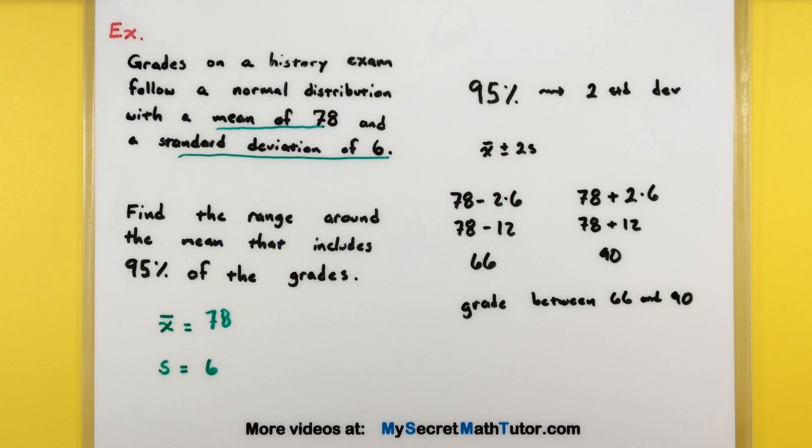Now this is just an approximate value. If you were looking at real data, it might not be exactly 95%, but it is probably going to be pretty close. Let's look at one more example.